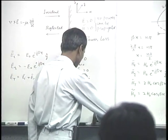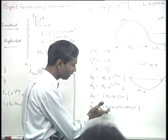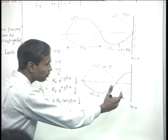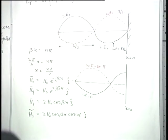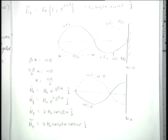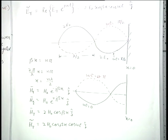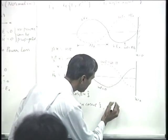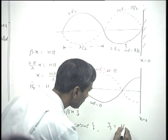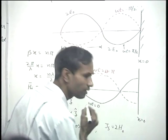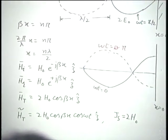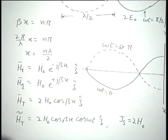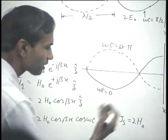There is one small remaining point. The total magnetic field intensity at x equal to 0 plus is twice H naught, but at x equal to 0 minus, since there can be no time-varying magnetic field in the perfect conductor, the total field is zero. Applying the boundary condition for tangential magnetic field at an interface, there must be a linear current density J_s equal to H_tan, which equals twice H naught. The tangential magnetic fields at the interface are discontinuous by the linear surface current density.